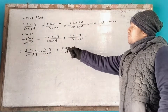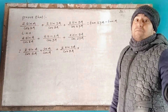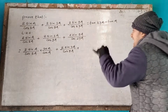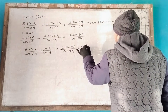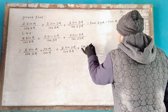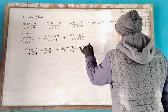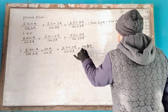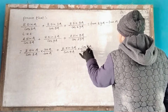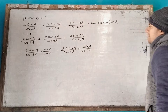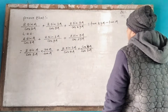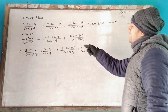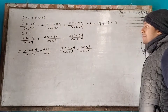2 sin a into cos 3a, divided by cos 3a. Then 2 sin 3a into cos 3a.